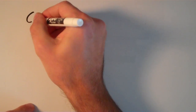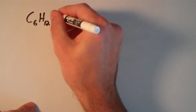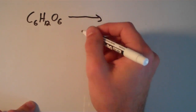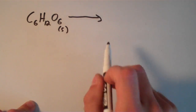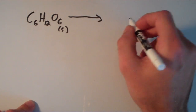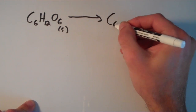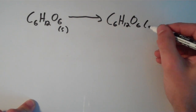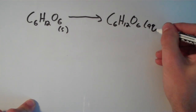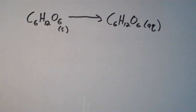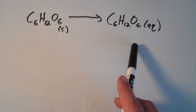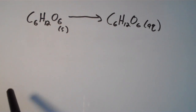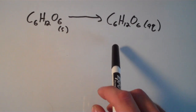Suppose we have glucose, C6H12O6, and we dissolve this glucose in water. This is originally a solid. Upon dissolving the glucose in water, all we've done is just surround each glucose molecule with water molecules. Before, they were solid and packed tightly together, but upon dissolving them in water, they're now aqueous and each glucose molecule is surrounded by water molecules.